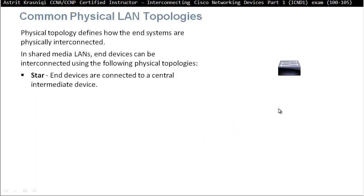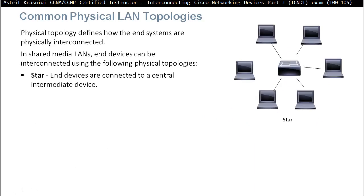Now the common physical LAN topologies. Physical topologies define how end systems are physically interconnected. In a shared media LAN, end devices can be interconnected using the following physical topologies. The first topology we're most familiar with is the star. End devices are connected to a central intermediate device. As you can see, the clients or end devices are connected to the switch. Same as with hub and spoke, if the switch fails, these end devices will not be able to communicate with each other.